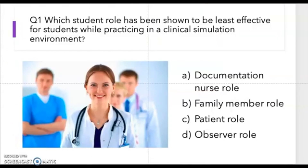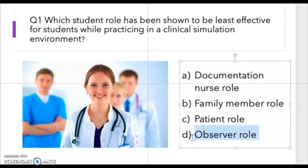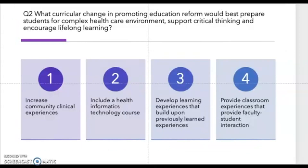Question one: Which student role has been shown to be least effective for students while practicing in a clinical simulation environment? The answer choices are: A) documentation nurse role, B) family member role, C) patient role, D) observer role. The correct answer is D — observer role.